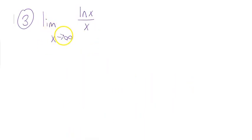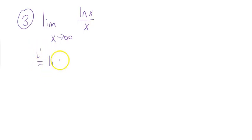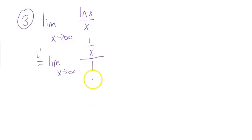For the third example, x is going to go to infinity instead of 0. Think about your natural log function — as you go to the right, it goes up forever, so that's like infinity. On the bottom, y equals x is a diagonal line that goes up toward infinity forever. So you have infinity over infinity as an indeterminate form, meaning I can use L'Hôpital's rule. I'm going to notate that and bring down my limit as I go to infinity, then take my derivative. The derivative of natural log is 1 over x, and the derivative of x is 1.